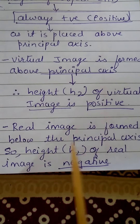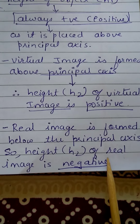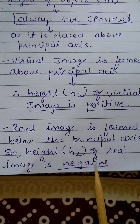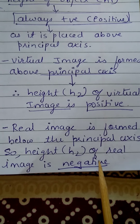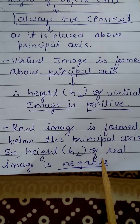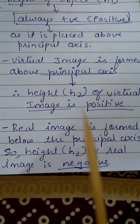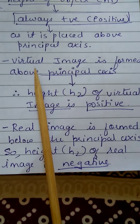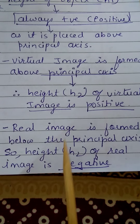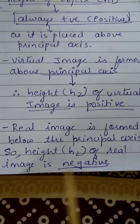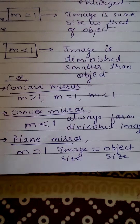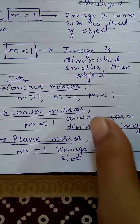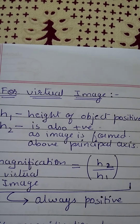Virtual images are formed beyond the mirror, behind the mirror, and they are virtual and erect. Because they are formed above the principal axis, they are considered positive. Real images are formed below the principal axis, so height H2 of real images is negative. In numerical problems, if it is given that the image formed is virtual, the image height is taken as positive; if the image is real, it is taken as negative.